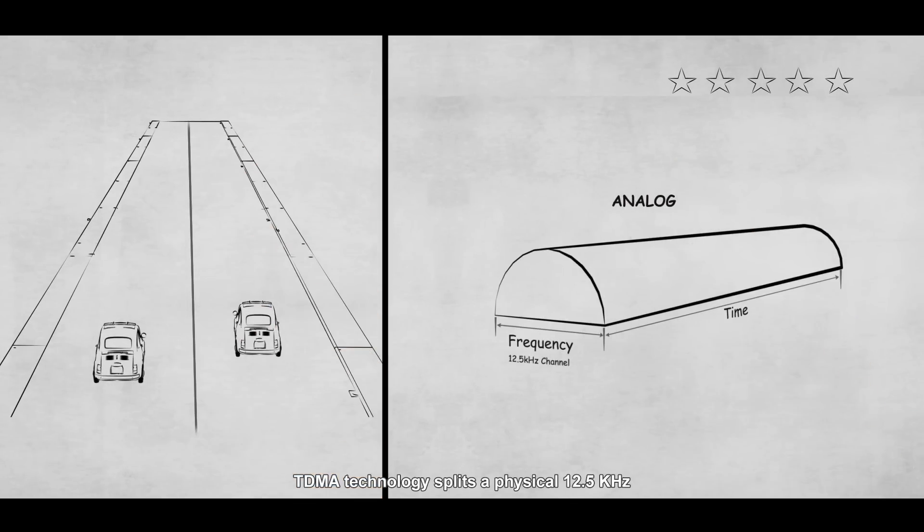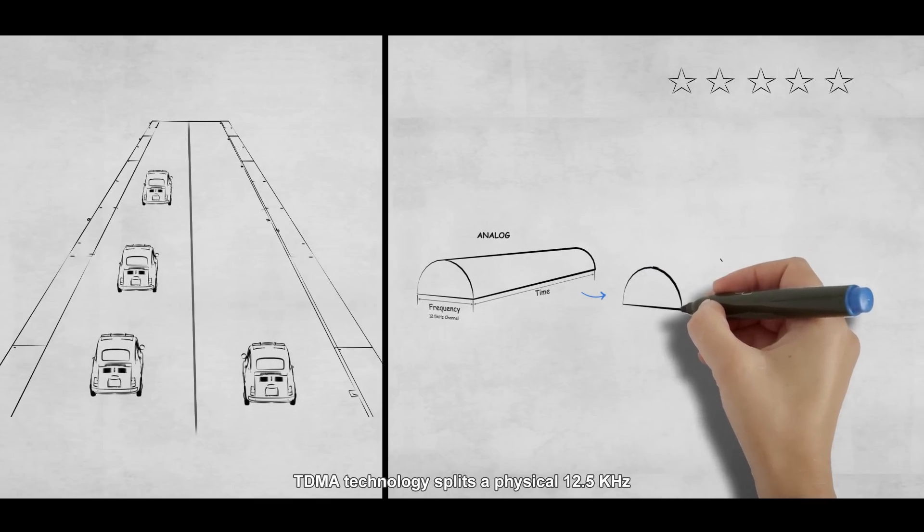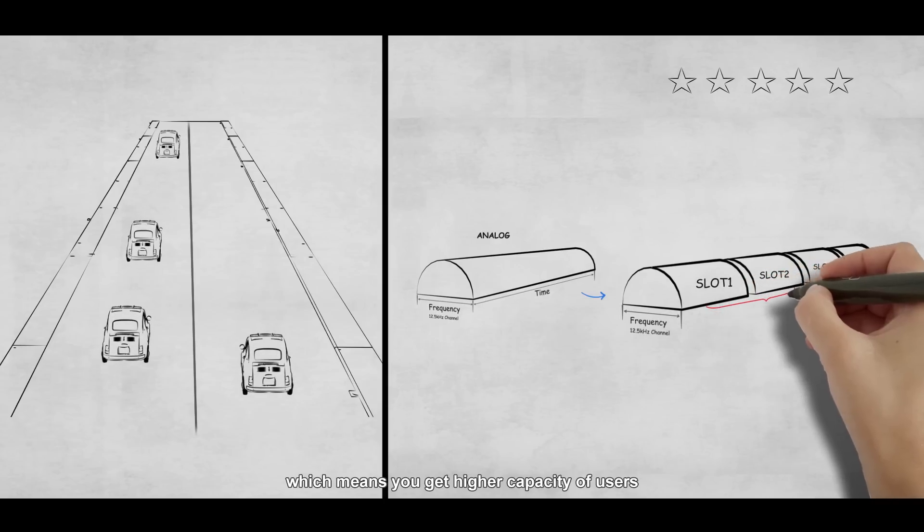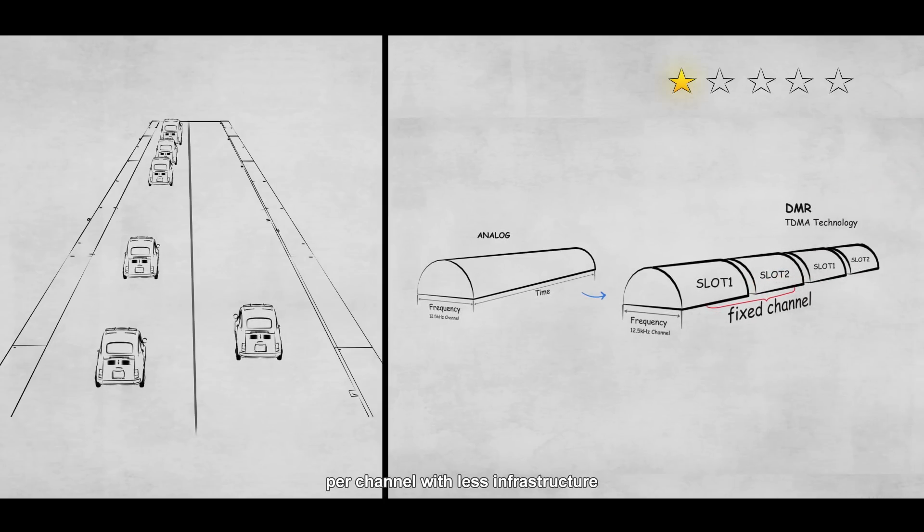TDMA technology splits a physical 12.5 kHz channel into two time slots, which means you get higher capacity of users per channel with less infrastructure.